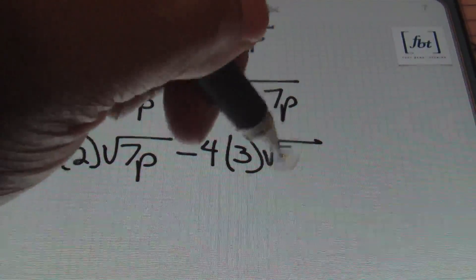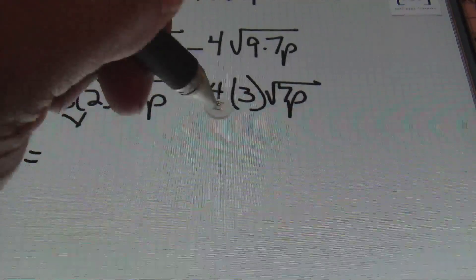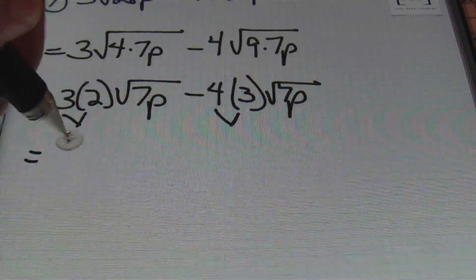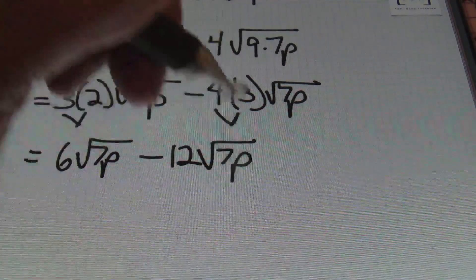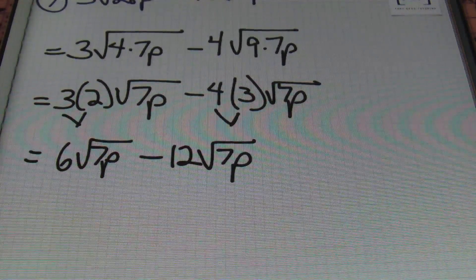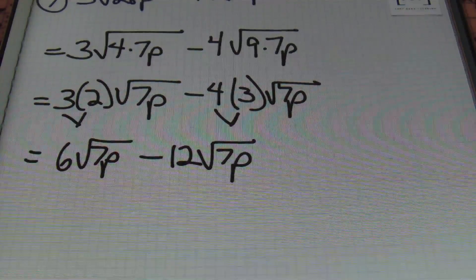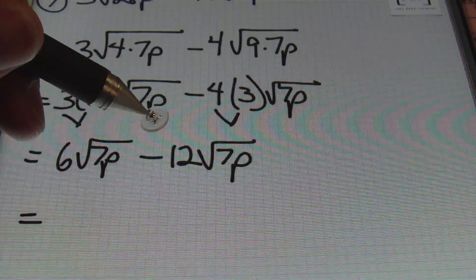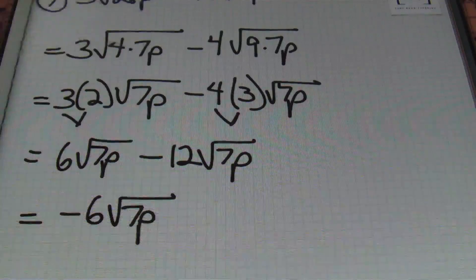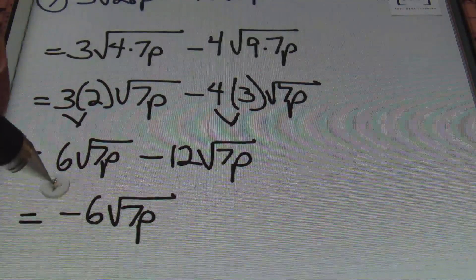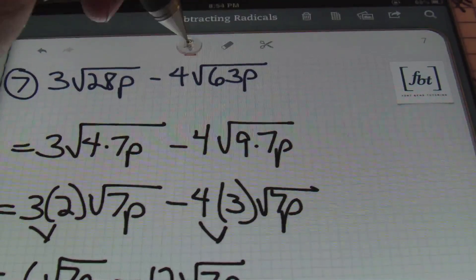Minus 4 times — square root of 9 is 3 — times the square root of 7p. Multiplying the outside values: 3 times 2 gives me 6 times the square root of 7p, minus 4 times 3 gives 12 times the square root of 7p. The radicals are identical, so I combine: 6 minus 12 gives negative 6 times the square root of 7p, and that's the answer.